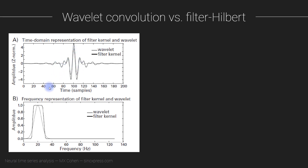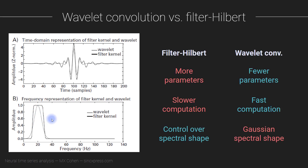Now let us look at the amplitude spectra — the frequency representation of the filter kernel and the wavelet. Here is the wavelet in grey, and of course you know that this is the wavelet even without the legend, because the shape of the power spectrum of the Morley wavelet in the frequency domain is always a Gaussian. And here we have the filter kernel. Again they are not exactly the same in the frequency domain, but they are quite similar.